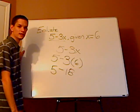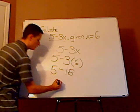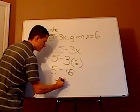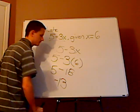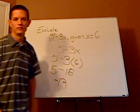And what's 5 minus 18? Yeah, that's going to give you a negative 13. And that's it. Nothing to it.